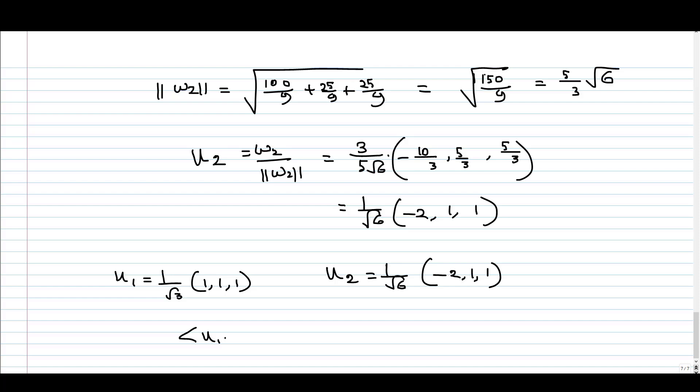So our orthonormal set is: u1 = (1/√3)(1, 1, 1) and u2 = (1/√6)(-2, 1, 1). If we calculate u1·u2, we get 0, and if we calculate the norm of both vectors, we get 1. So we really get an orthonormal set of vectors corresponding to v1 and v2 from which we started. This is the Gram-Schmidt method, by which we can transform any given set of linearly independent vectors into an orthonormal set of vectors.